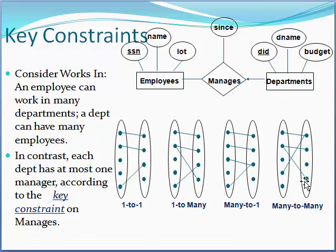These associations or relations between entities are called binary relationships because they involve two entity types. There are four types of binary relationships. The first is the one-to-one relationship. This type of relationship is used when for each instance in the first entity class there is only one instance in the second entity class, and vice versa.